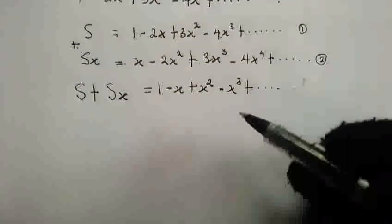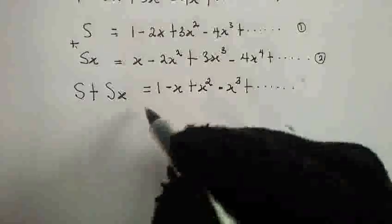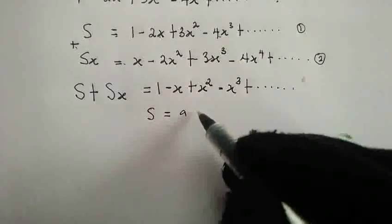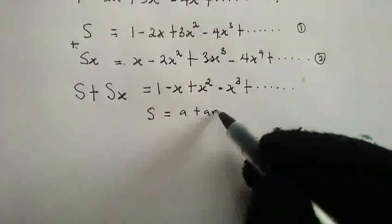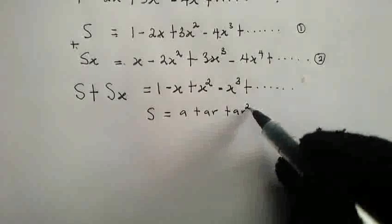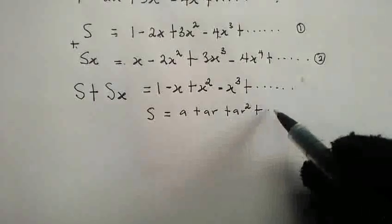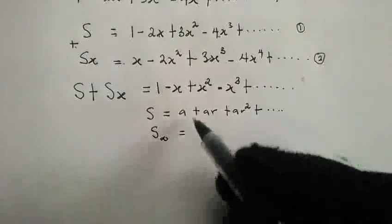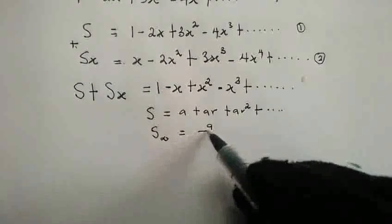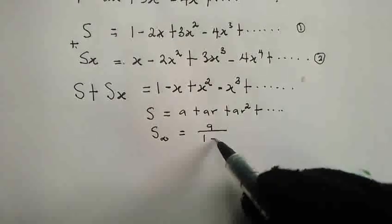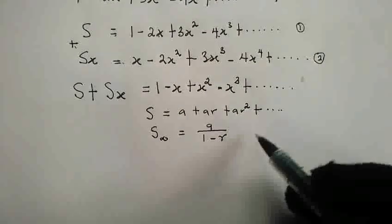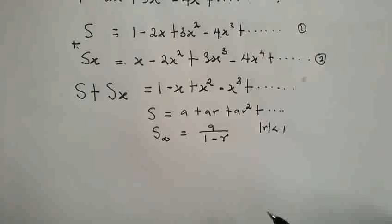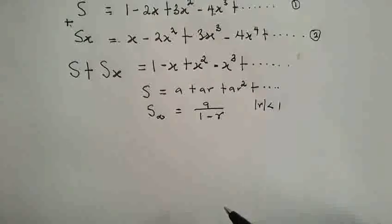Let us try to recall that when we have S equals a plus ar plus ar squared plus and so on, we all know that the sum to infinity of this is a all over 1 minus the common ratio r, where absolute value of r is less than 1. So, now, we're going to use this idea.